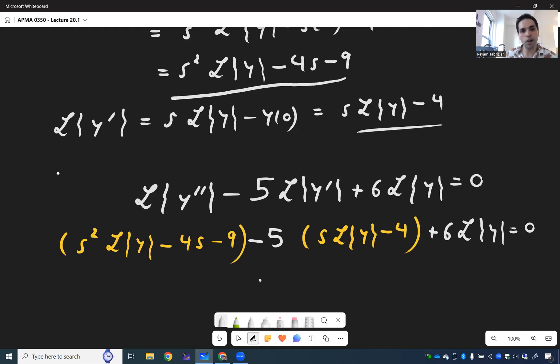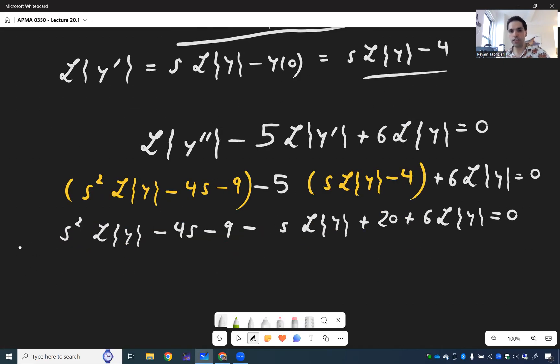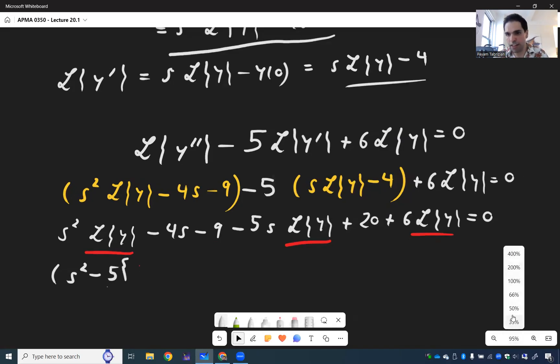Let's expand that out. So S squared L of y minus 4S minus 9 minus 5S L of y and then plus 20, I believe, plus 6L of y equals 0. And if you look at this more carefully, notice, this is precisely an equation for L of y. So if you can solve for L of y, what we get is S squared minus 5S plus 6L of y.